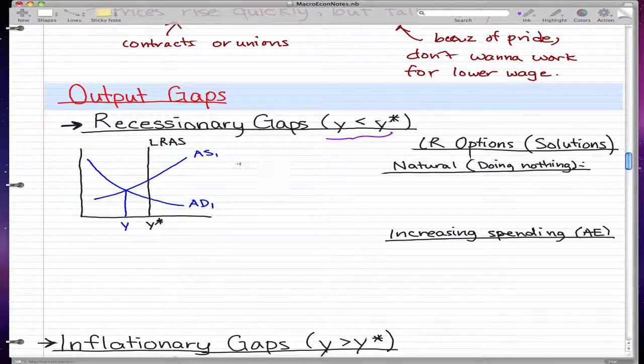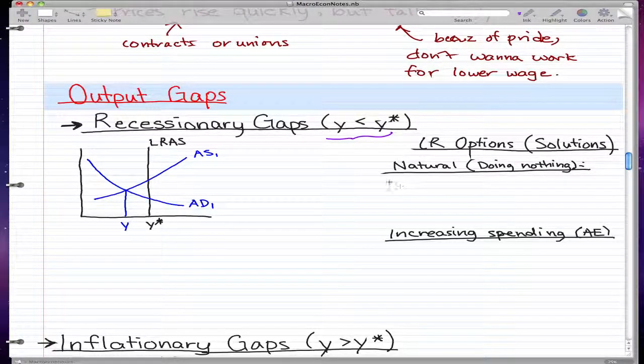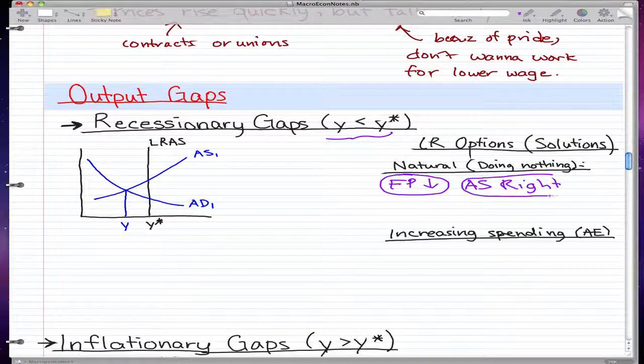Some solutions to make equilibrium: the first solution is the natural way of doing it by doing nothing. By doing nothing, factor prices - the prices of the resources we need to produce the goods - fall. With the same amount of money, we can supply more, and that will cause aggregate supply to move right. So factor prices go down, aggregate supply goes right.